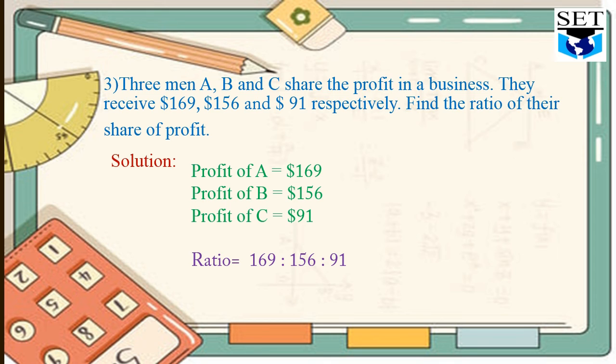After this, we will reduce them by 13. We will divide them by 13. They all are divisible by 13. Like this: 13 times 1 is 13, and 3 is left. It will go with this 9. 13 times 3 is 39. Similarly, 13 times 1 is 13, 2 is left. 2 will go with this 6 and become 26. 13 times 2 is 26. And similarly, 13 times 7 is 91. So the ratio after simplification is 13 to 12 to 7.